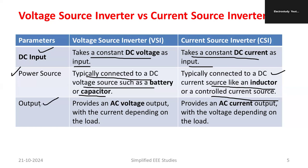Talking about the output, the voltage source inverter provides an AC voltage output with current depending on the load. While comparing with the current source inverter, it provides an AC current output with voltage depending on the load. These are a few important differences.